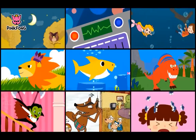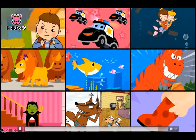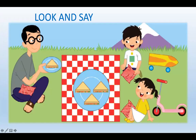Great! Okay, now we move on to the next activity. Look at this. Can you see the picnic blanket? What shape is it? It's a square. Very good! How about this one? What shape is the plate? It's a circle. Good job!